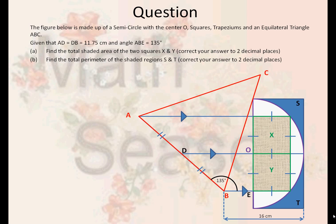Part A: find the total shaded area of the two squares X and Y. Part B: find the total perimeter of the shaded regions S and T. The answers need to be correct to two decimal places.